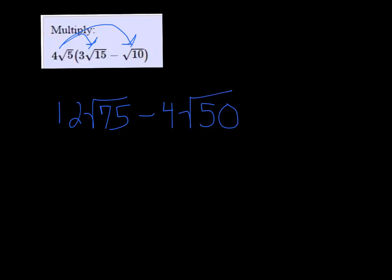Both of these have—75 and 50 both have 25 as factors. Let's write it out and I'll change my color here so you can see better. We get 25 times 3 and 25 times 2 on the other one.